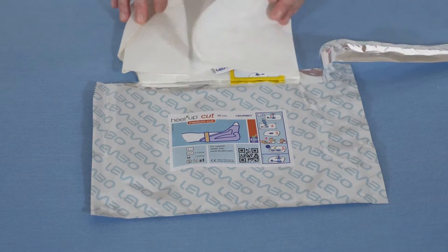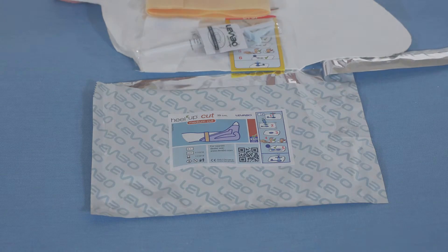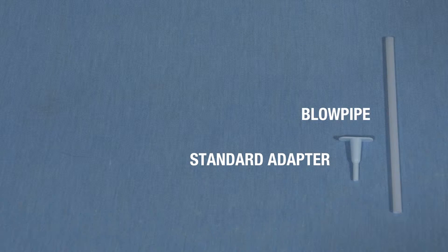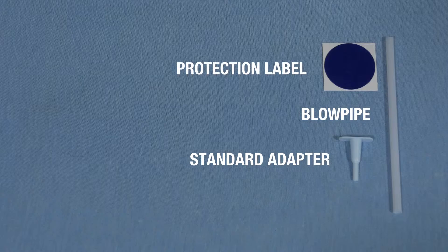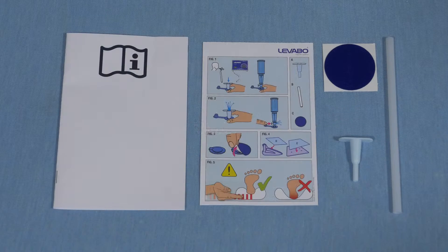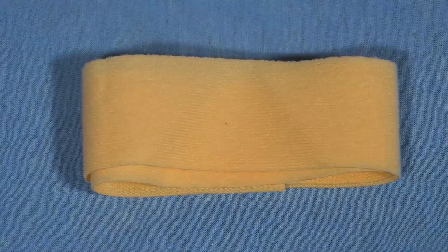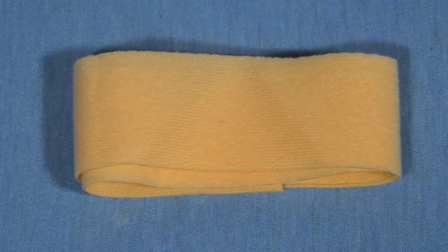Heel Up Cut Medium is clean but not sterile. The package contains the heel lifter, a standard adapter for inflation, a blowpipe for manual inflation, one protection label to place on the valve after inflation, and a user manual. An extra colored ribbon for supporting the cushion against the leg is also enclosed.